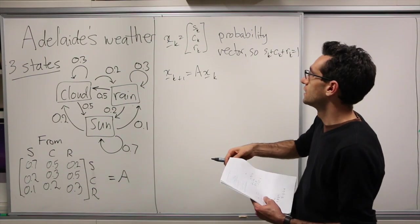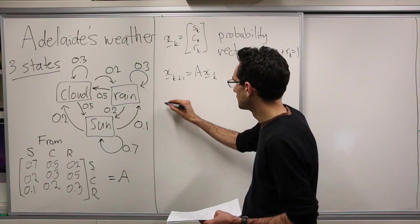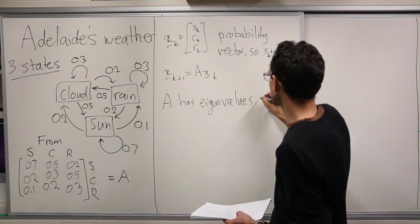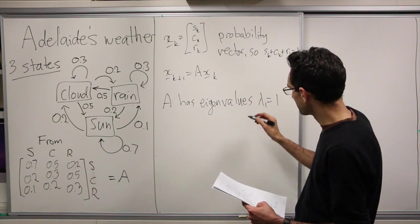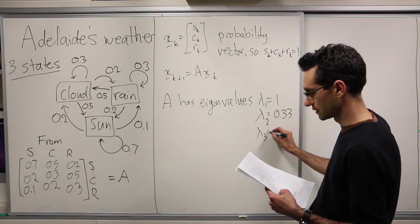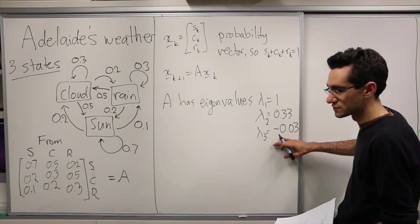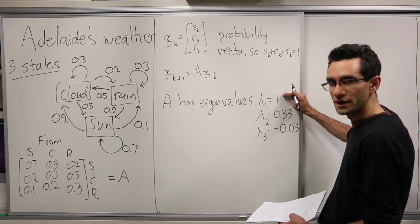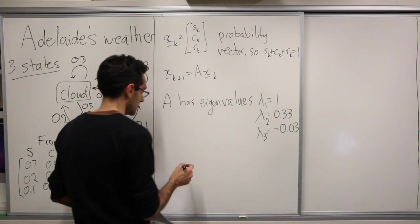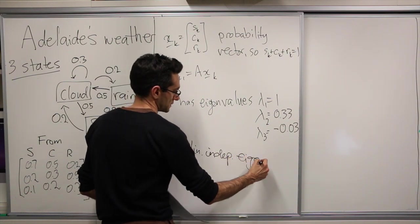So as always we want to decompose this. We want to get the eigenvalues and eigenvectors. And since A is a stochastic matrix, one of its eigenvalues is 1. So A has eigenvalues: lambda 1, which is 1, we know that already, and the other two which we can calculate: lambda 2 is 0.33, and lambda 3 is minus 0.03. So all of these are less than 1 in magnitude. This one is negative but that's okay. We have 1 at 1, and others are smaller than 1 in magnitude. So we have 3 eigenvalues, so we have 3 linearly independent eigenvectors.